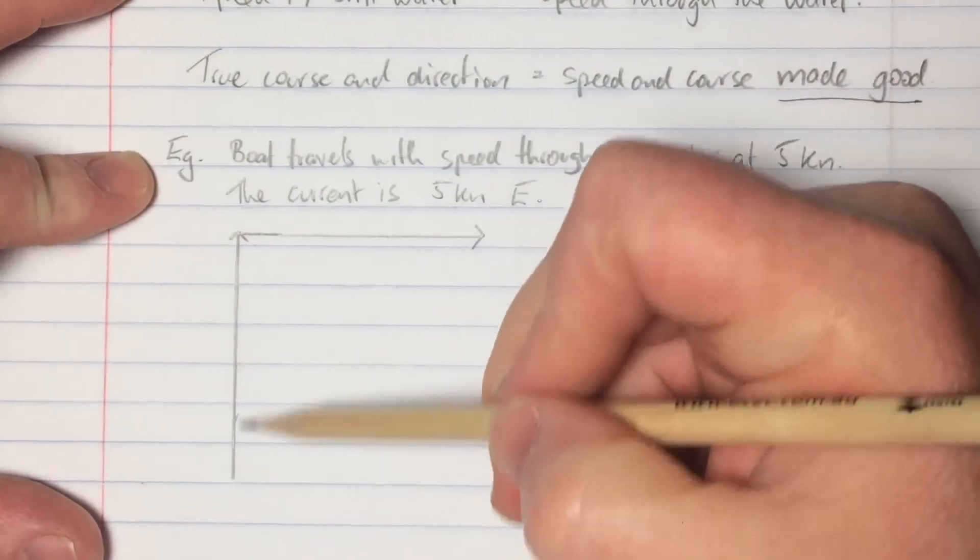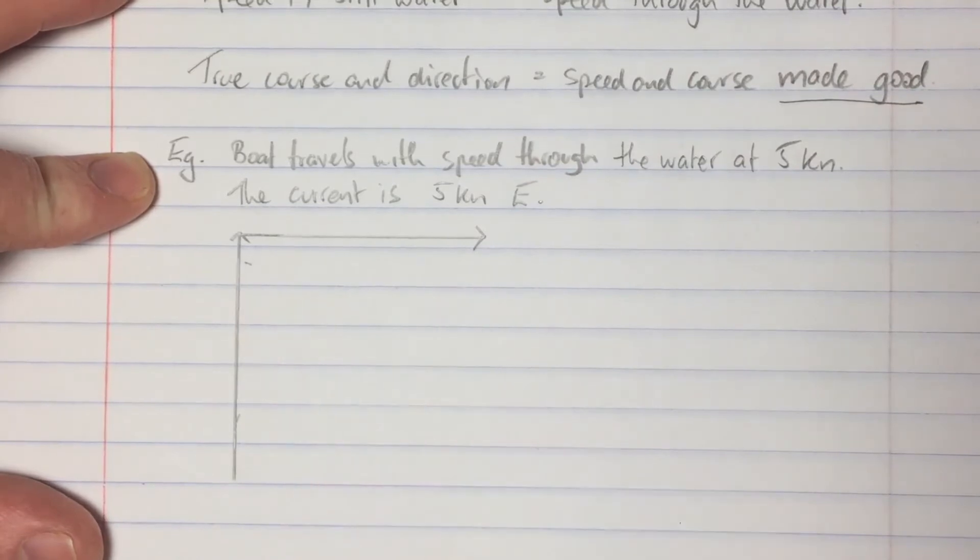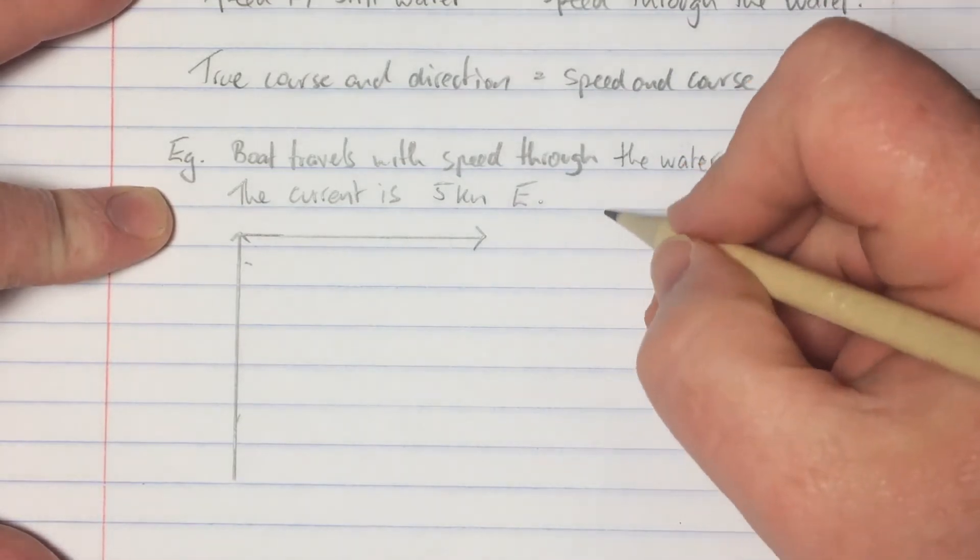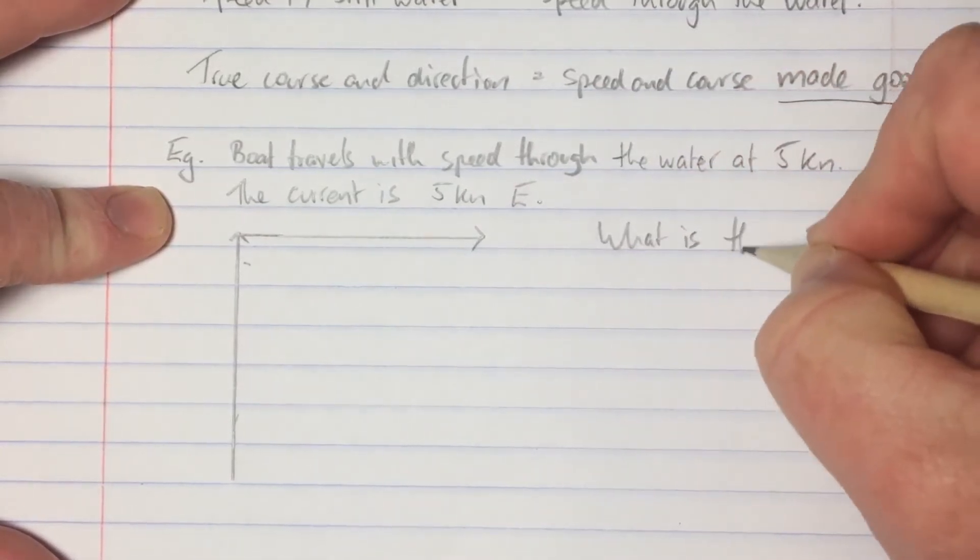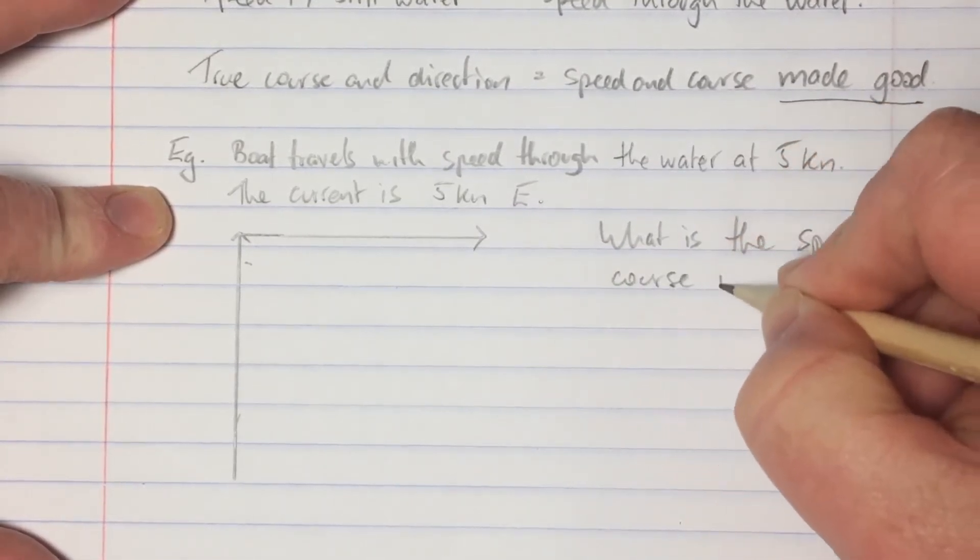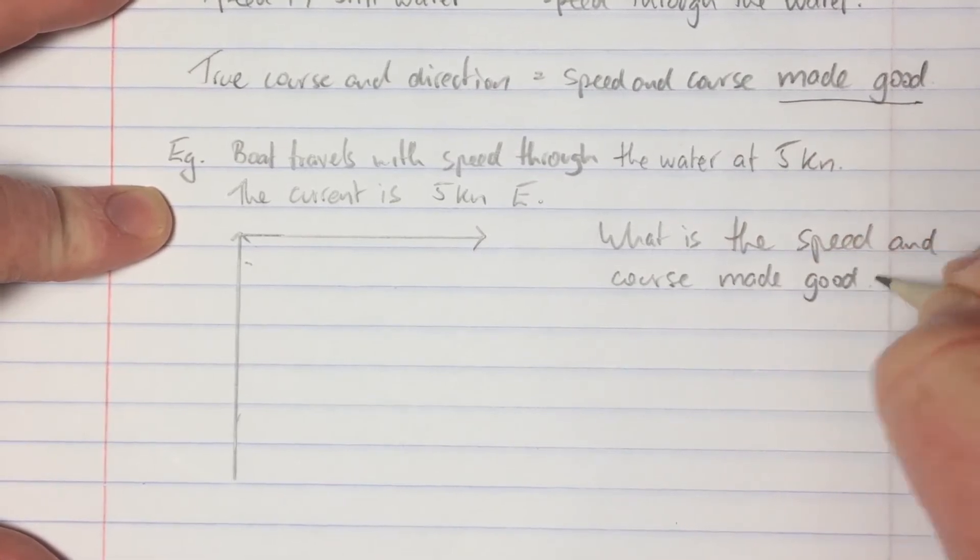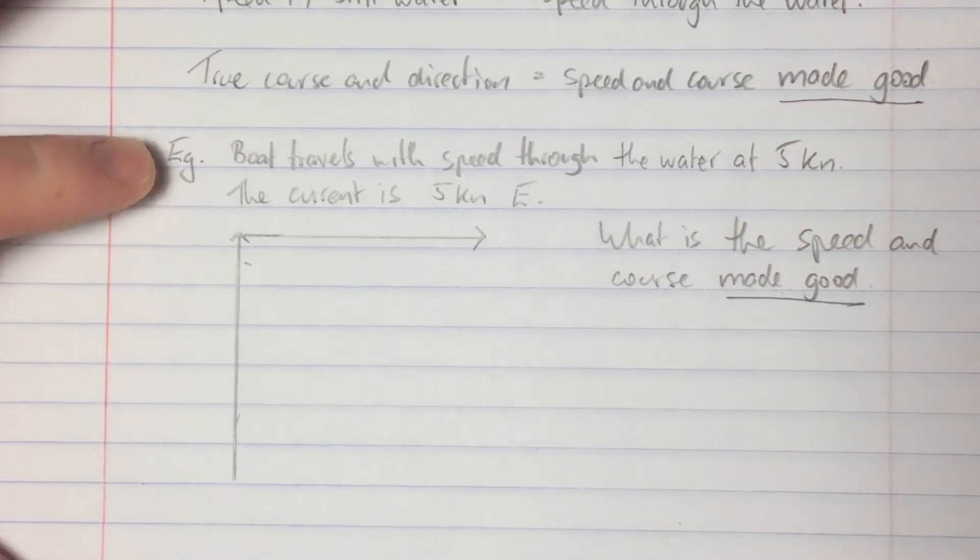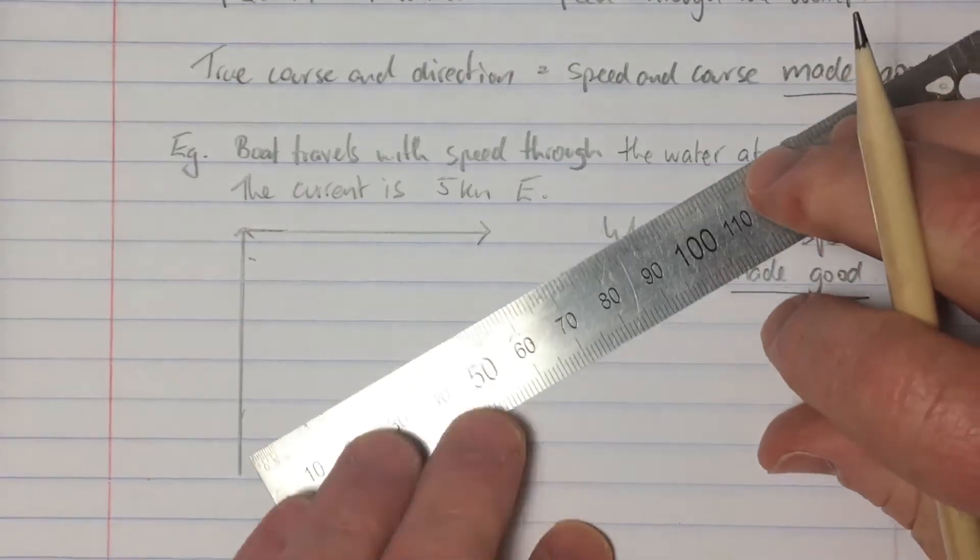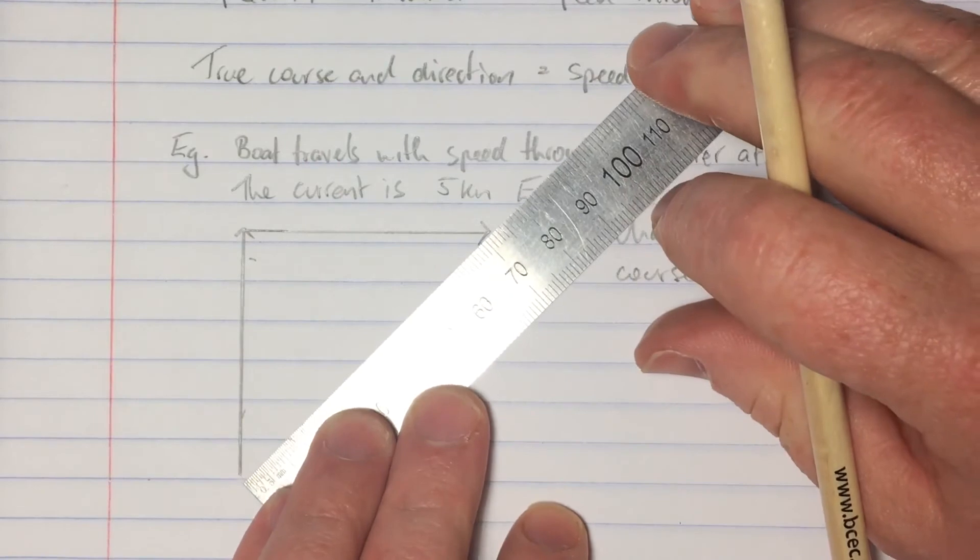So here we have the speed through the water of five knots, the current of five knots in an easterly direction. We might want to then determine what's the speed and course made good. The speed and course made good is the speed and course that takes into consideration the speed through the water of the boat as well as the current.